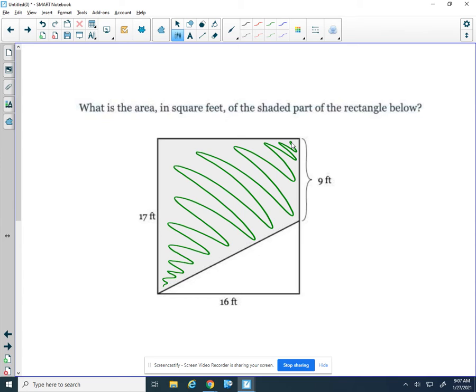So I can think of this shaded region, the region I just made green, as the rectangle, the whole rectangle, minus this triangle. So I'm going to write it out that way: rectangle minus triangle.